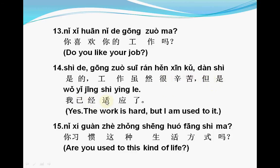是的 means 'yes'. The next sentence: 工作虽然很辛苦，但是我已经适应了。 工作 means 'work', 虽然 means 'though' or 'although', 很 means 'very', 辛苦 means 'hard', 但是 means 'but', 已经 means 'already', 适应了 means 'get used to'. So: Although the work is very hard, I am already used to it.